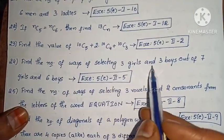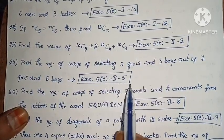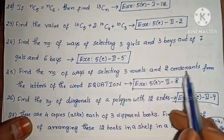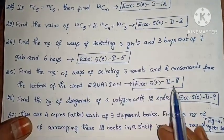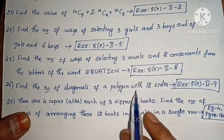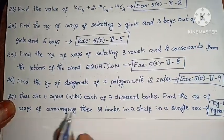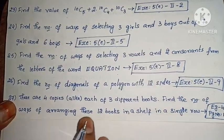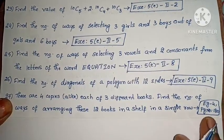Next: find the number of ways of selecting 3 girls and 3 boys out of 7 girls and 6 boys (Exercise 5, Roman II, fifth one). Next: find the number of ways of selecting 3 vowels and 2 consonants from the letters of the word EQUATION (Exercise 5, Roman II, eighth one). Next: find the number of diagonals of a polygon with 12 sides (Exercise 5, Roman II, ninth one). Next: there are 4 copies each of 3 different books; find the number of ways of arranging these 12 books on a shelf in a single row (Example 4, page 180).